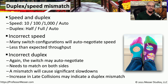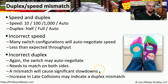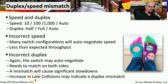A similar situation exists with duplex. You want to be sure that both sides match — if one side is set to full duplex, the other side should also be set to full duplex. If you do have a duplex mismatch, you will see significant slowdowns, and if you were to look at the error counters on those devices, you'll probably see that the late collision counter continues to increase as you send data over that connection.